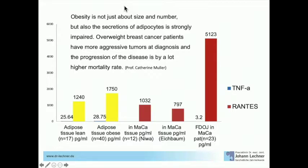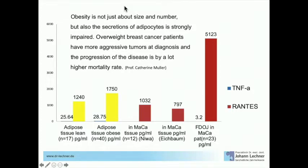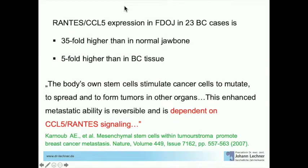We have 5,120 picograms per milliliter in the jawbone. So inside the organ, a difference of 500 picograms is the decisive point to develop cancer — but here in the jawbone we have 5,000. In a very high-ranked paper published in Nature, you find this sentence: 'The body's own stem cells stimulate cancer cells to mutate, to spread, and to form tumors in other organs.' And importantly: 'This enhanced metastatic ability is reversible and is dependent on RANTES signaling.'